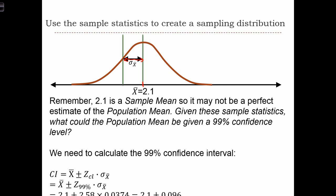And what we are going to do is calculate the confidence interval around that sample mean to determine whether or not it's likely that the population mean is more than 2.0.